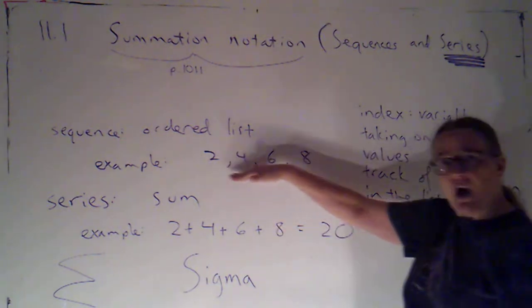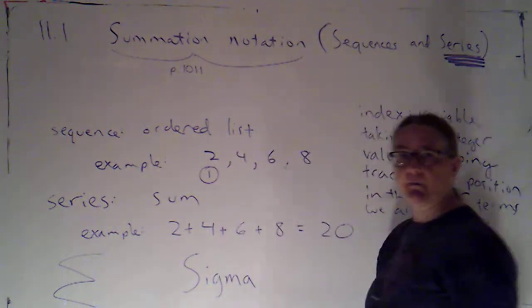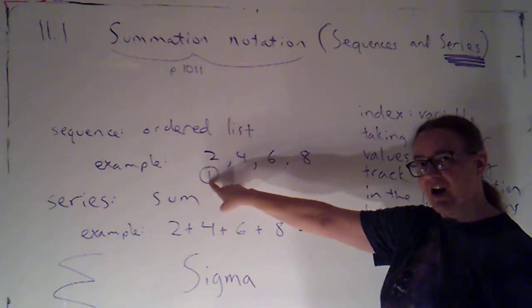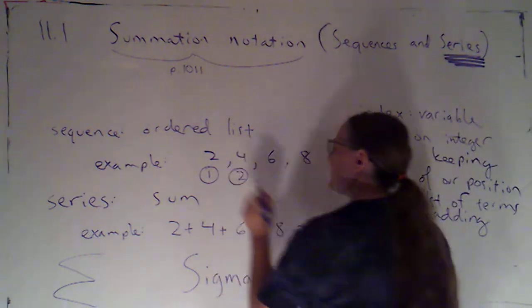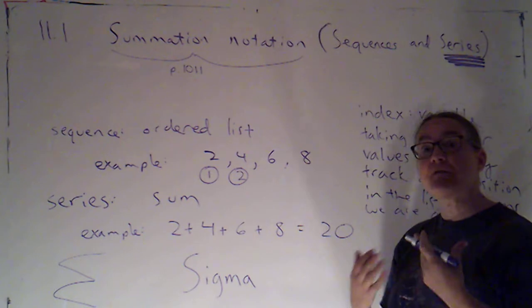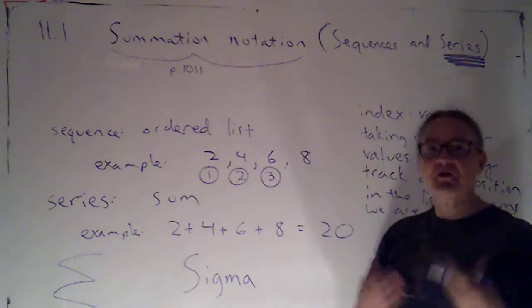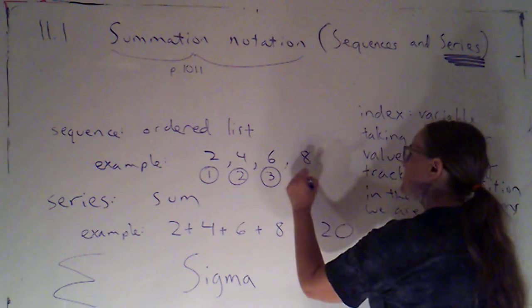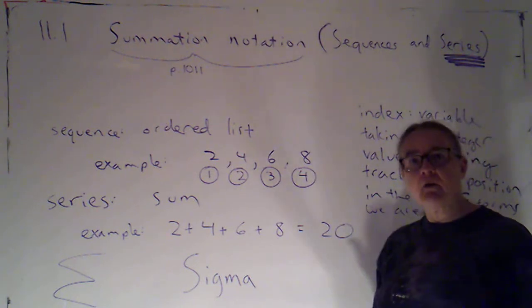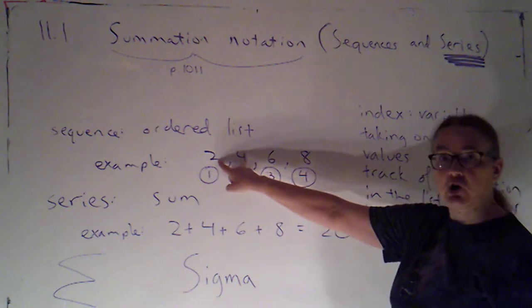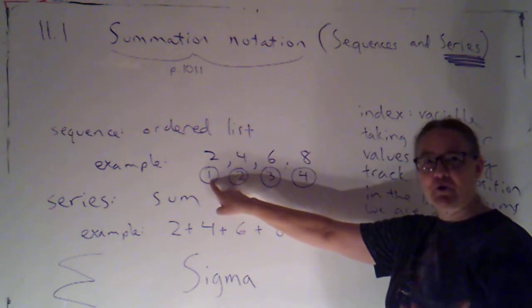So when we talked about this list, I said 2, that was my first number. So I can say the index there would be 1. 4 was my second number. So that has an index of 2. 6, that's my third number. So that has an index of 3. And 8 was my fourth number. So it has an index of 4. Very often, the initial term in our list will have an index of 1 to correspond with the fact that it's our first term.